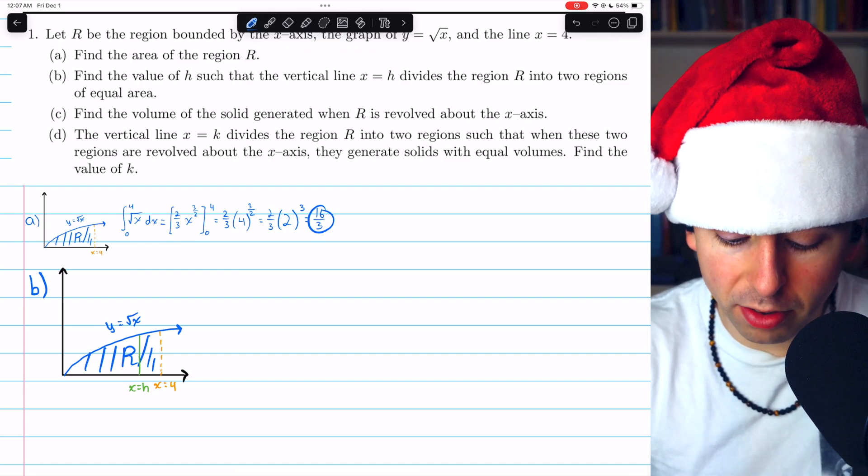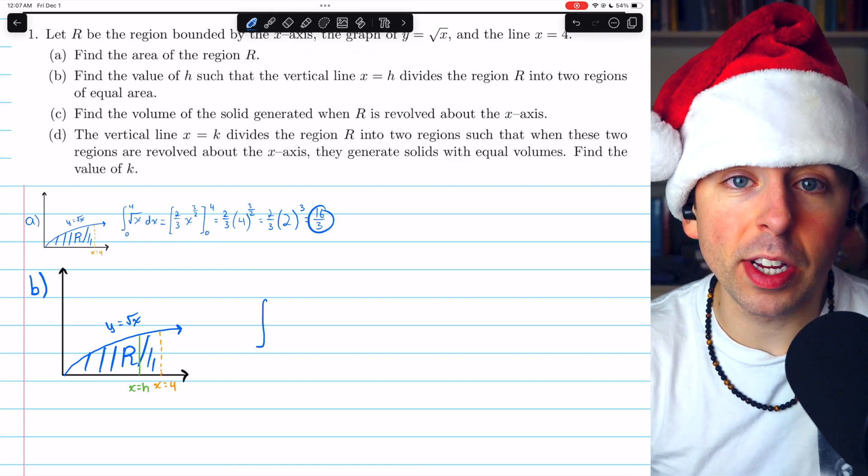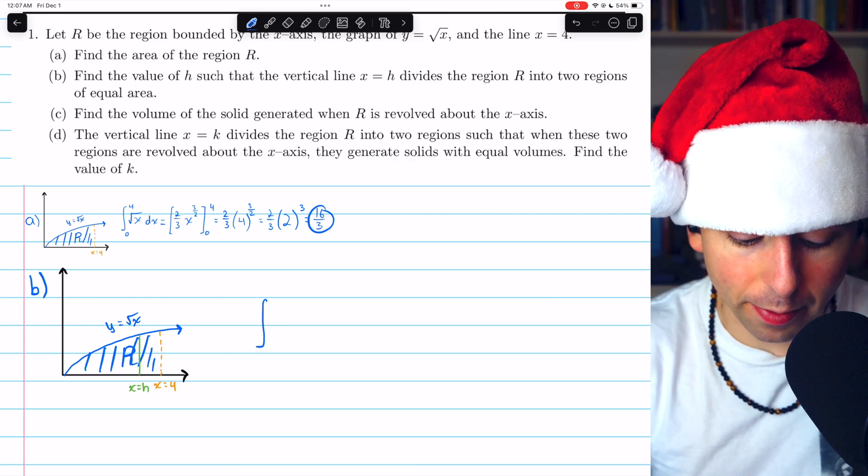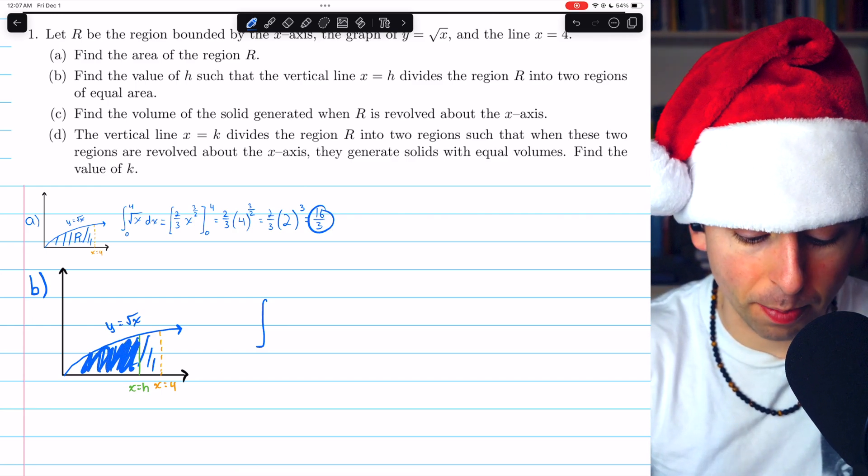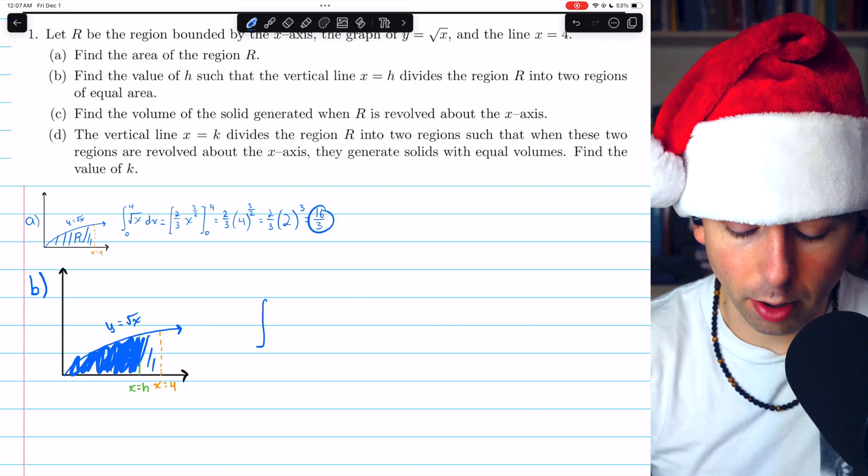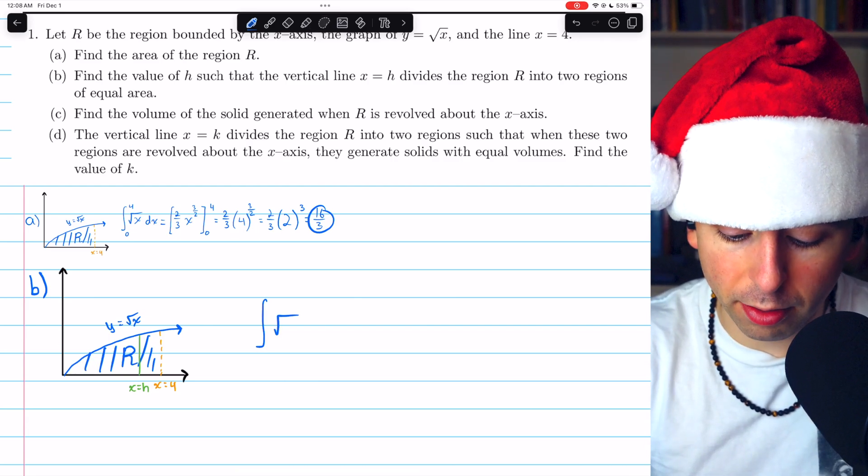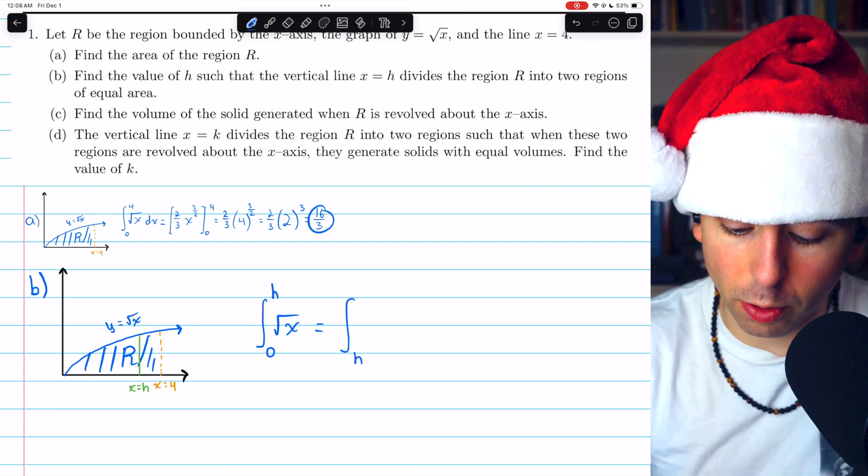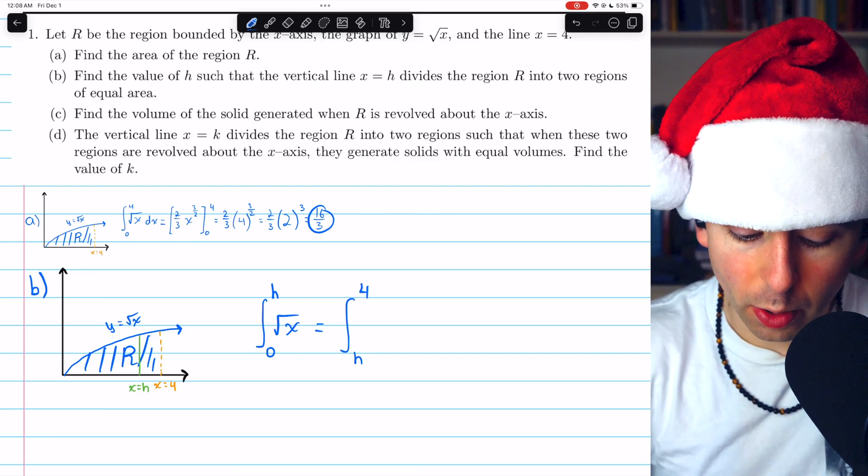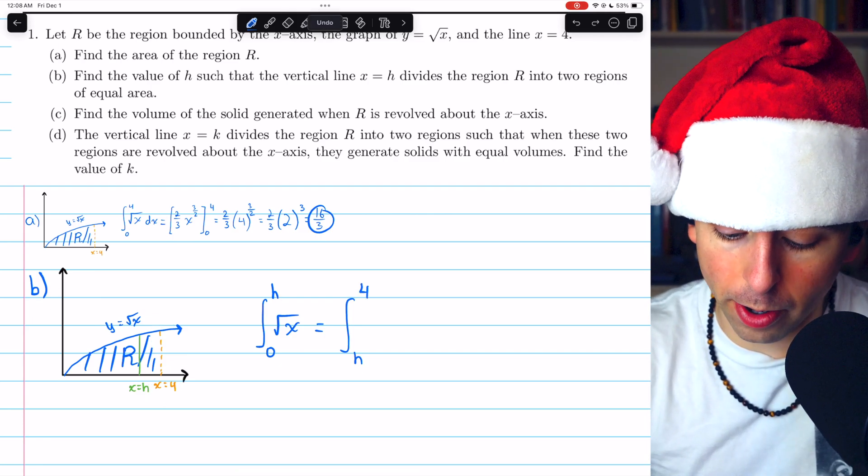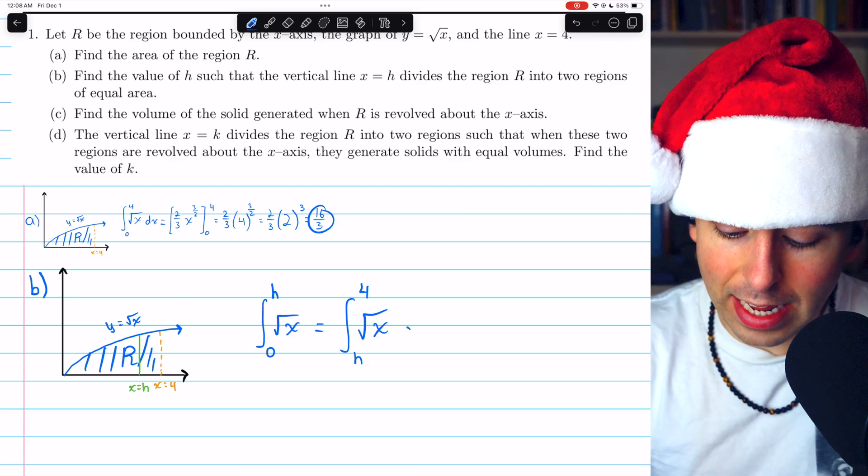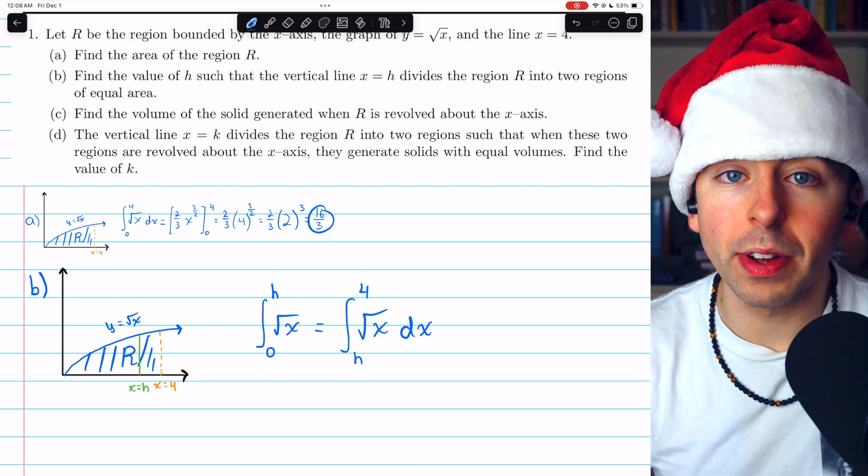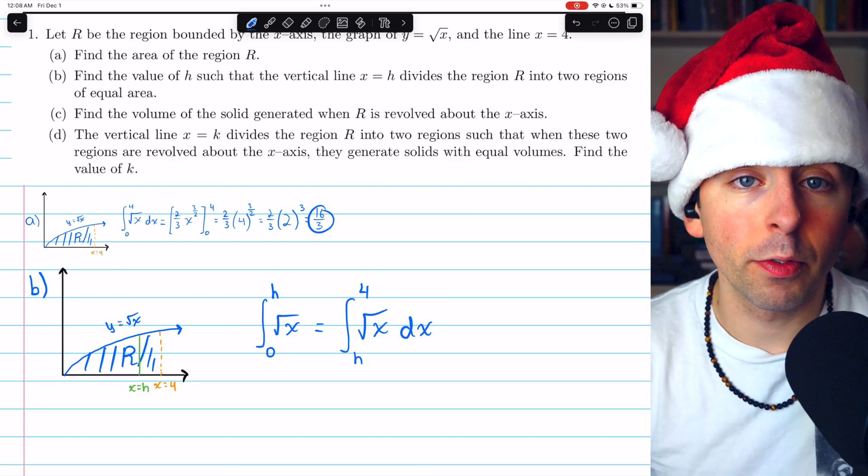So the first integral is going to be the area of the region of R that's to the left of X equals H. That's this part over here. So for that, we're just going to integrate the square root of X from 0 to H. And this has to equal the right side of the region, which is the integral from H to 4. We're still stopping at X equals 4. And so these things need to equal each other. We can just go through and evaluate this and then solve for H.